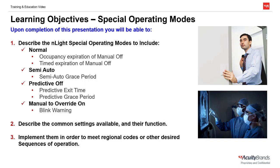We'll also talk about the best practices for adjusting the default settings of output devices, like power packs and InLight enabled fixtures, to meet regional codes or other specified sequences of operation. Essentially, these settings determine how the space will function in different scenarios, like when we turn the lights off and leave for the day, or when we turn the lights off and wish to remain in the room. Today, we'll discuss normal mode and its two sub-settings — occupancy expiration of manual off and timed expiration of manual off — semi-auto and the semi-auto grace period, predictive off and its sub-settings, and manual to override on and the option of adding a blink warning.